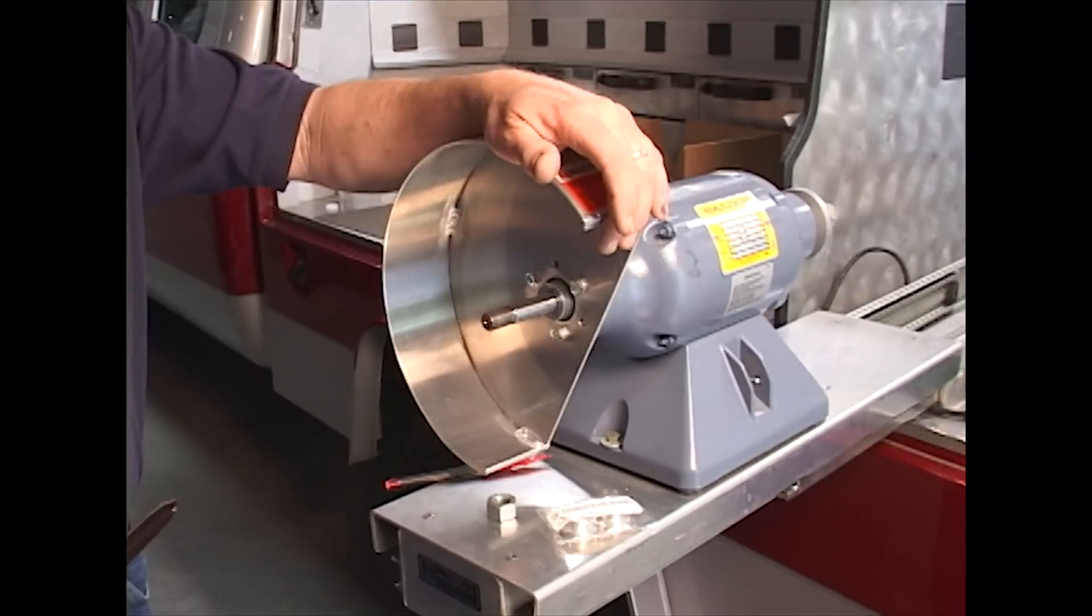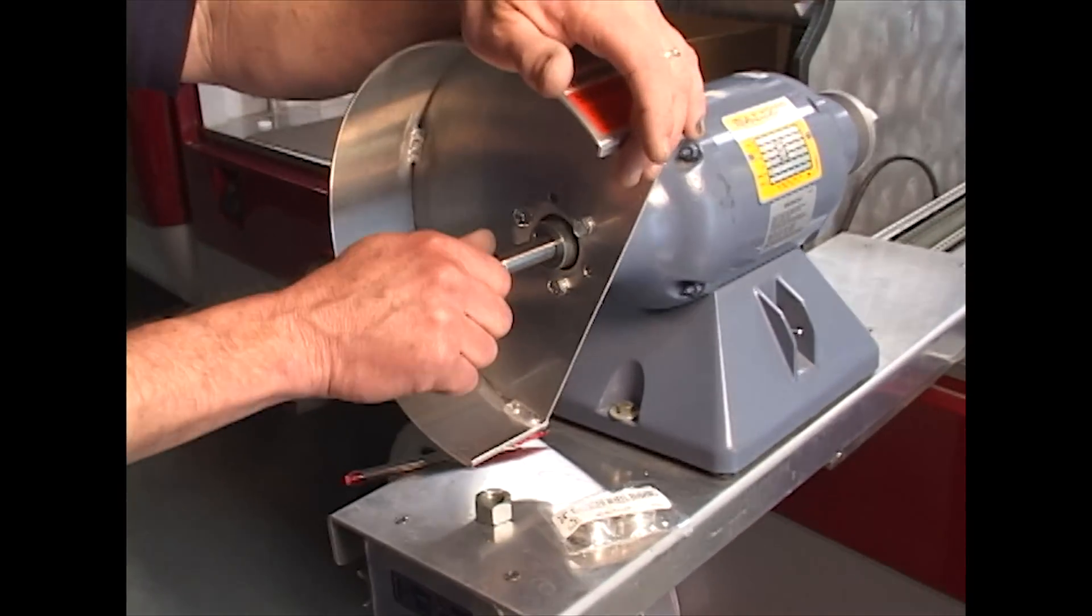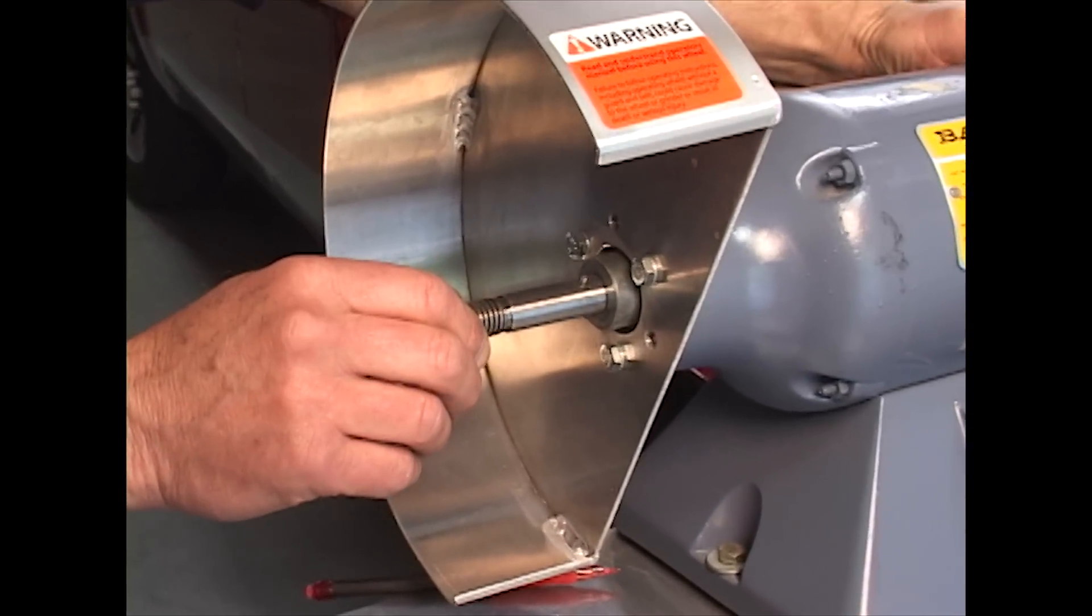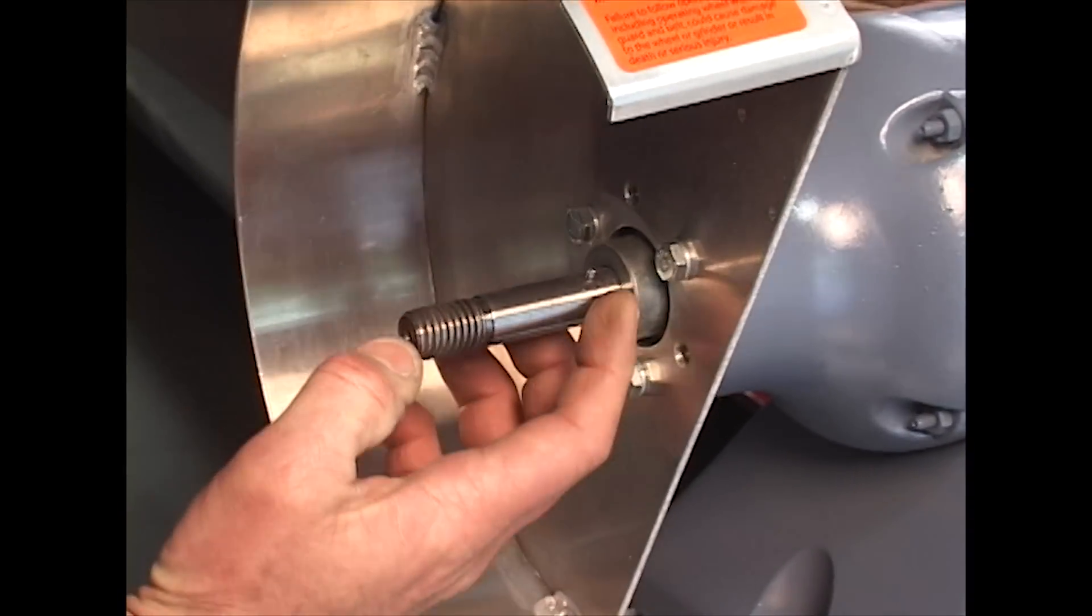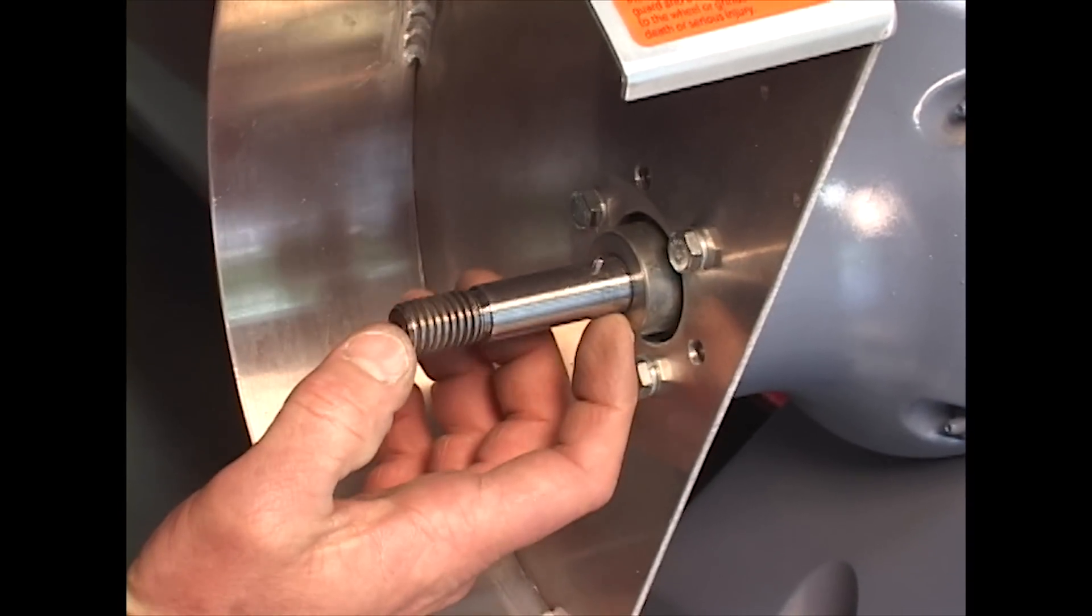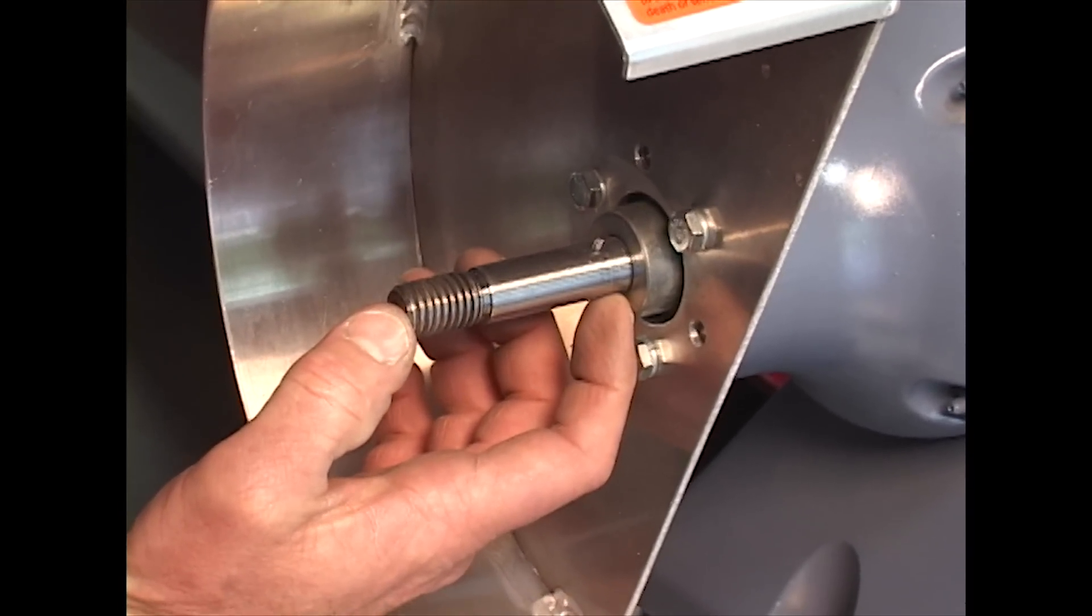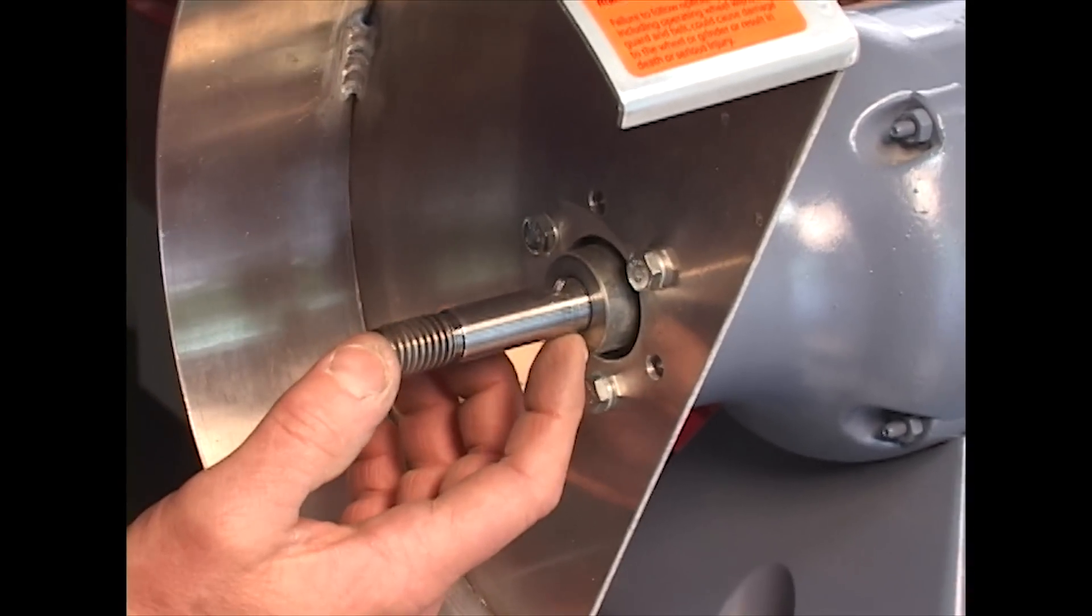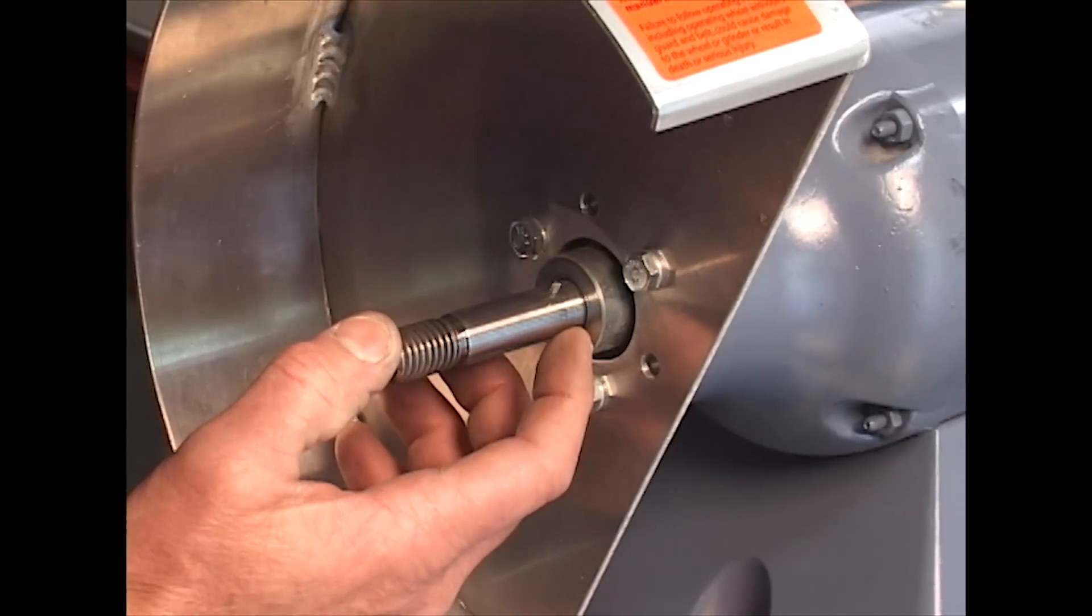The next step, in case you're not using a Baldor grinder unit, the important thing to notice is that you will need at least two and a half inches of shaft length from the collar to be able to assemble the expander wheel onto this shaft.